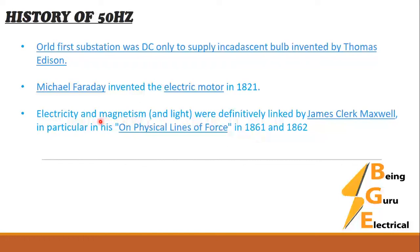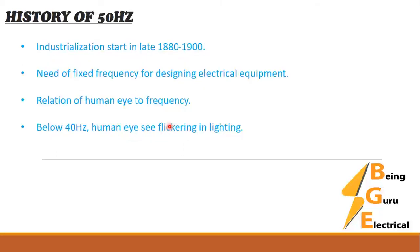This electricity and magnetism linked to AC was studied by Maxwell in 1861–1862 in 'Physical Lines of Force.' After the invention of the electrical motor and Maxwell's studies, with industrialization starting in the late 1880s and 1900, they needed a fixed frequency for designing electrical equipment and motors. When you design anything, you need a fixed frequency or fixed voltage as a basis, so they started thinking about what frequency to use.